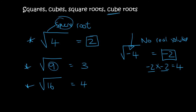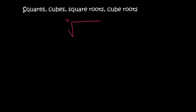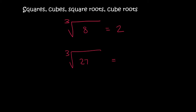A cube root is different. Cube roots have a 3 at the top and will have numbers such as 8. What this means is: what number times by itself 3 times gives you 8? That is 2. Don't believe me? 2 times 2 times 2: 2 times 2 is 4, and 4 times 2 is 8. For 27: what times what times what gives you 27? That's 3. Let's confirm: 3 times 3 is 9, times 3 is 27.